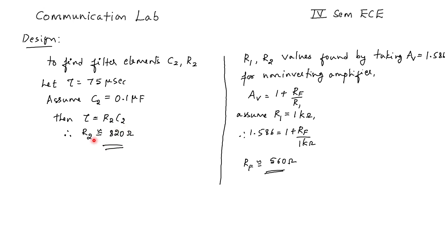We have to consider the next available value of the resistor. Similarly, by taking the gain of the non-inverting amplifier as 1.586 and assuming R1 as 1 kilohm, by substituting the gain and R1 we can approximate the value of the feedback resistor.